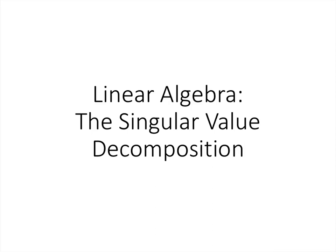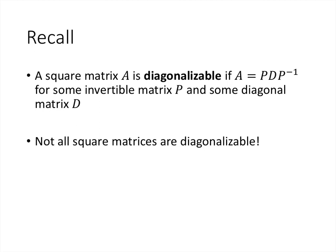In this lecture, we're going to talk about the singular value decomposition. If you recall, a square matrix A is diagonalizable if we can write it in the form PDP inverse for some invertible matrix P and some diagonal matrix D. But as we've seen, not all square matrices are diagonalizable. However, we also saw that all symmetric matrices are not only diagonalizable, but orthogonally diagonalizable. And we're going to use that fact to prove the decomposition that we call the singular value decomposition.